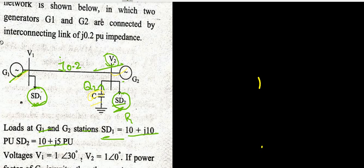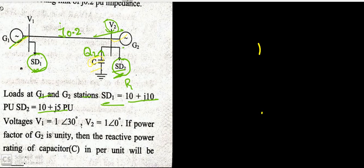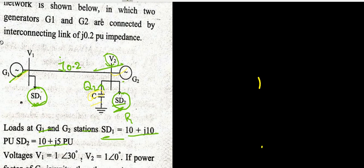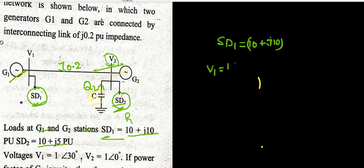Voltages at the two buses are given as V1 = 1∠30° and V2 = 1∠0°. The power factor of generator G2 is unity. The question asks: what is the reactive power rating of capacitor C in per unit? We know SD1 = 10 + j10, V1 = 1∠30° where 30° is the load angle delta, and V2 = 1∠0°.